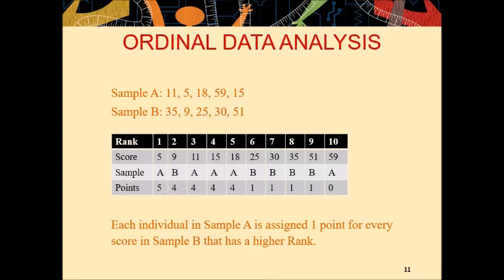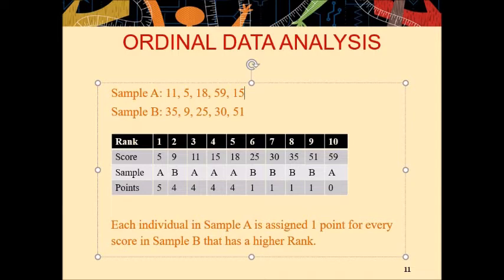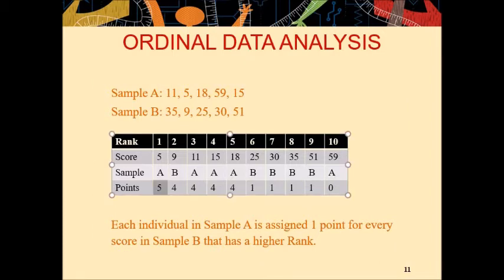Similarly, 9 belongs to sample B. You can see here. Now you will check in sample A that how many individuals have higher rank than 9. Here you can see, 11 has higher rank than 9, 18, 59, and 15: 1, 2, 3, 4. So, you will give 4 points to score 9. And similarly, you will assign all the points.